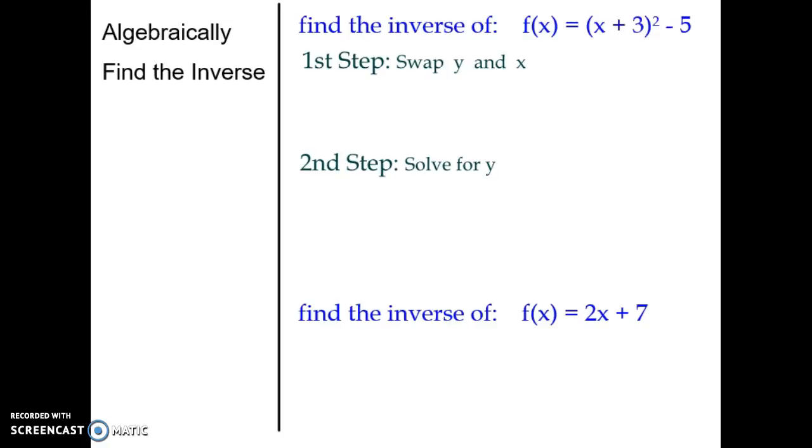Let's find inverses with an algebraic expression. Here, first step, when you have an algebraic expression, I'm going to change the f of x to a y and rewrite the problem with y. Swap my x and y. So now it's x equals y plus 3 quantity squared minus 5. I'm going to step down to the second step. It asks me to solve for y.